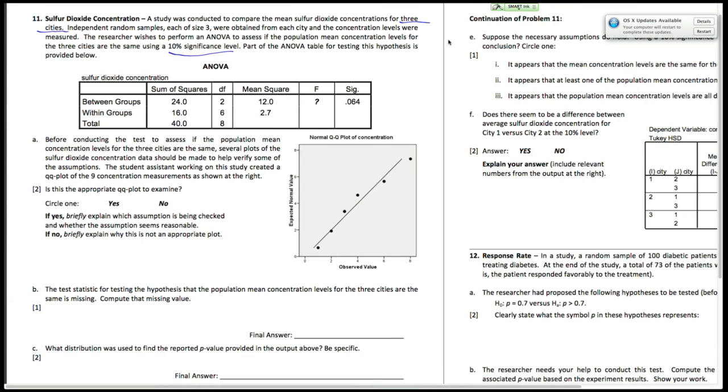So we're going to, first of all, evaluate if this is the right QQ plot to examine. And remember, for ANOVA, we're assuming that all three cities have mean sulfur dioxide concentrations that come from a normal distribution. Not just one. So this is not the correct QQ plot. We would need three plots for three cities.